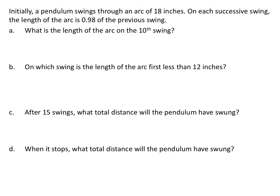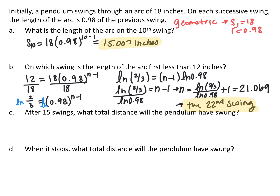A pendulum swings through an initial arc of 18 inches, and each successive swing is 0.98 of the previous swing. We want to find the length of the arc on the 10th swing. This is a geometric series with first term 18 and common ratio 0.98. Using the explicit formula: 18 × 0.98^(10−1). The 10th swing will have an arc of approximately 15.007 inches.